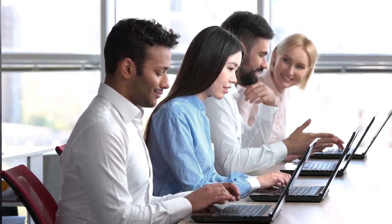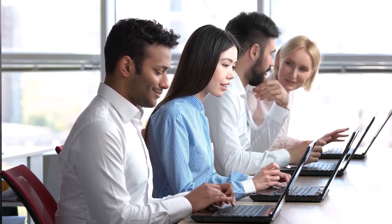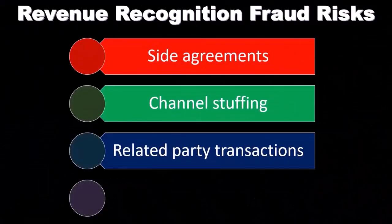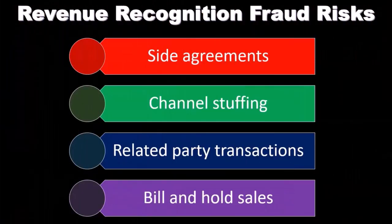Another way that a manager or company might try to manipulate or increase their sales is by making sales to a related party at terms that aren't at arm's length, meaning they're not like normal market sales because they're at a related party level. Then we have bill-and-hold sales.